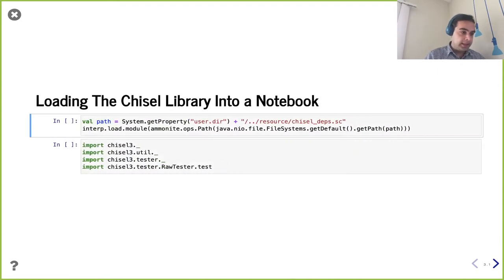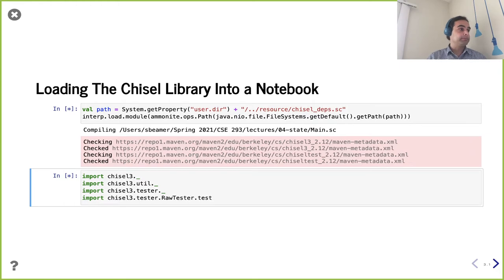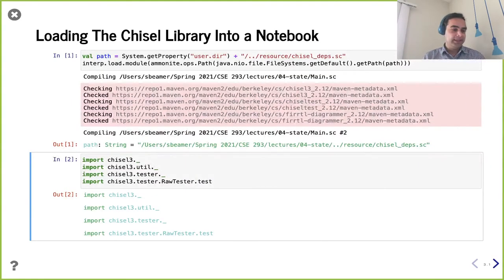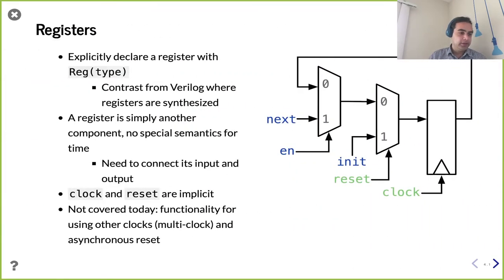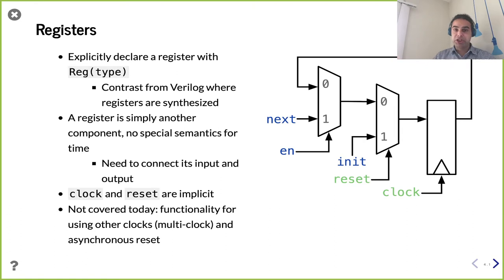As always, we're going to go ahead and load things into our notebook. Registers in Chisel aren't anything too special — we just declare them as another object. It's a reg, just another object in the design graph we're building. Remember, our Chisel designs are really just valid Scala programs where execution constructs a graph of Chisel objects, and register is just another component, like logic gates or adders.